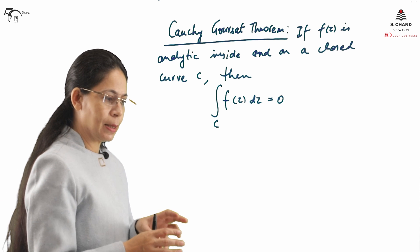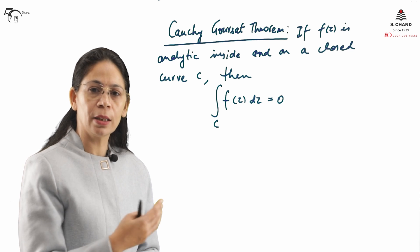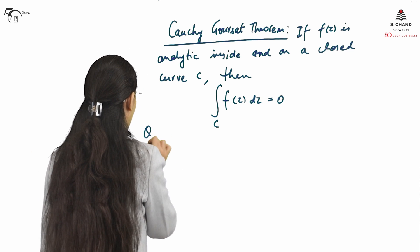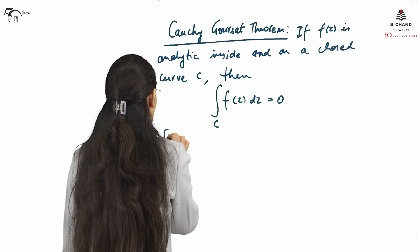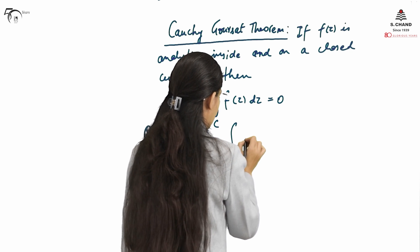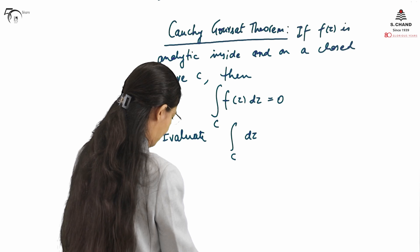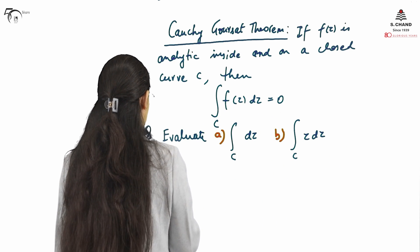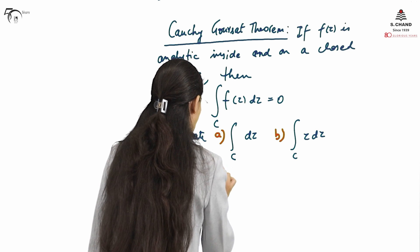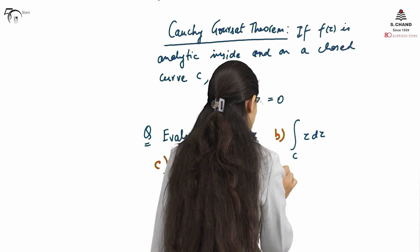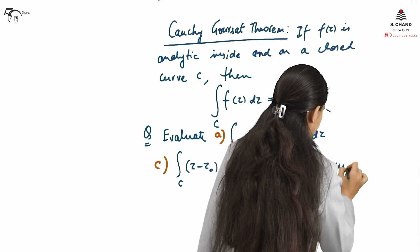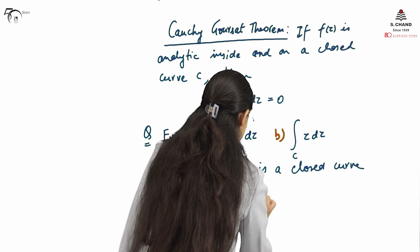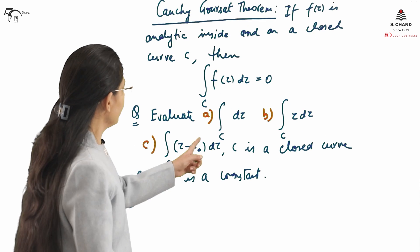This is a very important theorem because if a function is proved to be analytic inside and on a closed curve C, then the integration is zero — no need to calculate the integral. Let us see this with a few examples. Evaluate: (a) ∮_C dz, (b) ∮_C z dz, (c) ∮_C (z − z₀) dz, where C is a closed curve and z₀ is a complex constant.